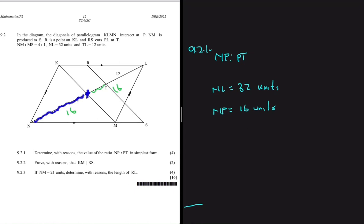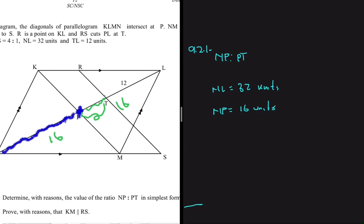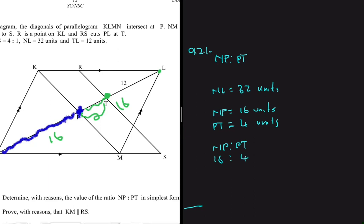Now we need to find PT. From T to L is 12 units, and PL equals 16 units, so PT equals 16 minus 12, which gives PT equals 4 units. Therefore NP to PT is 16 to 4, which simplifies to 4 to 1.